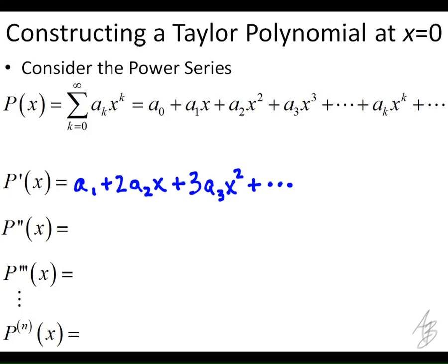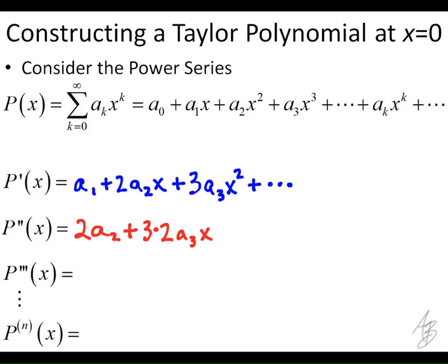Since this is an infinite power series, we can take the second derivative by differentiating the first derivative again. The constant term falls out, so we get 2a₂ first, then the derivative of the next term gives us 2·3·a₃·x. We write these numbers in descending order — we could multiply it out, but it's actually going to end up being cleaner if we don't.